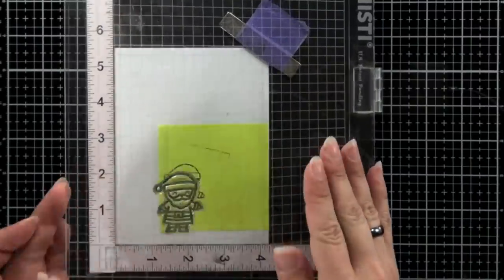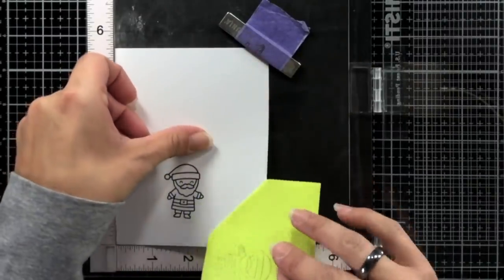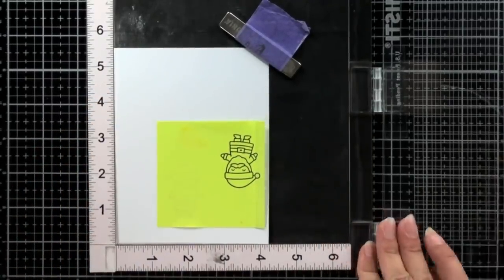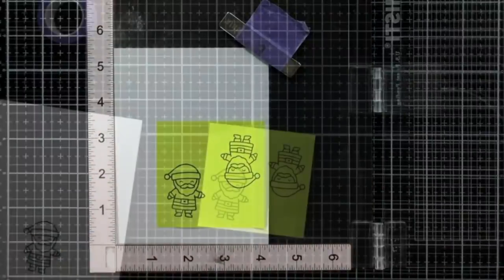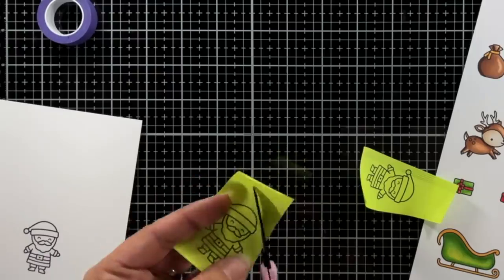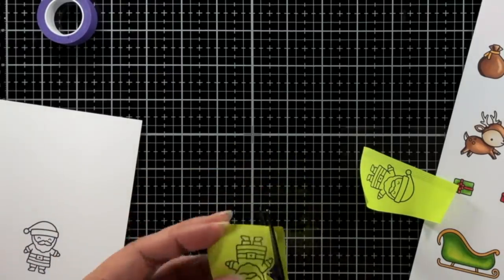Now I'm also going to create a mask and this is using the full sticky notes that Lawn Fawn carries. This is great because the entire thing is nice and sticky and it'll provide a great mask for my image when I do my ink blending. Then I can just take some scissors and fussy cut that out.